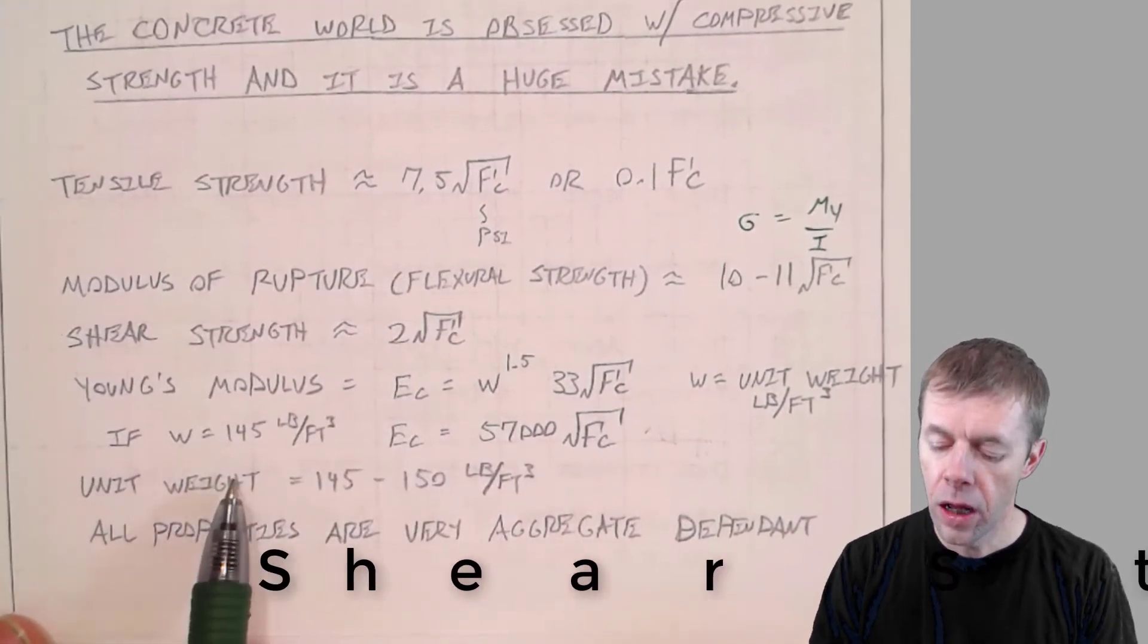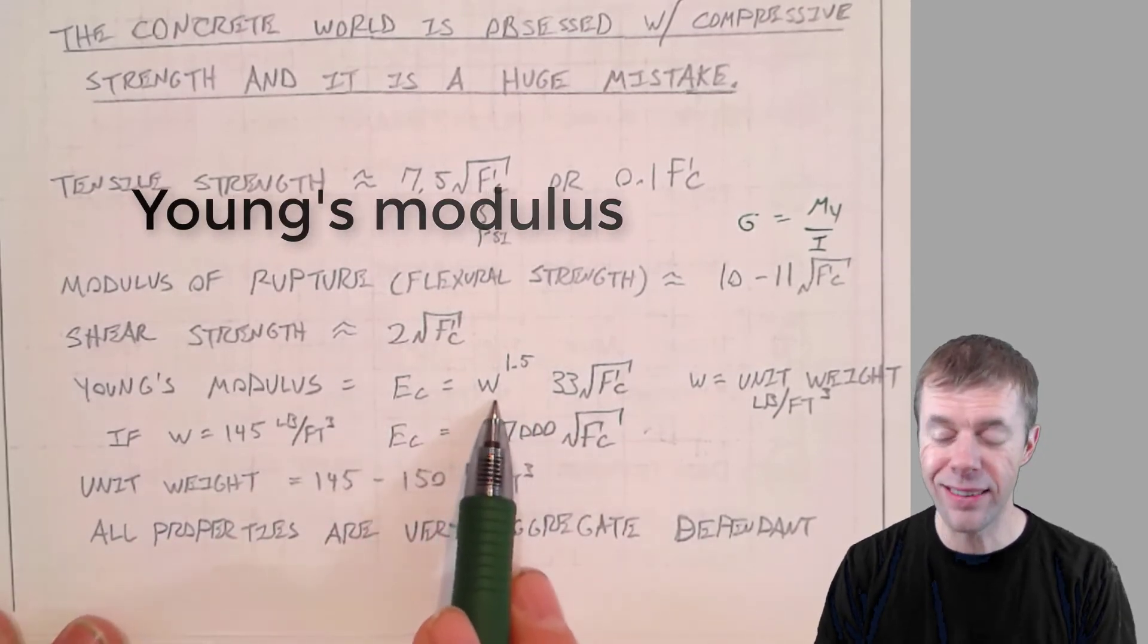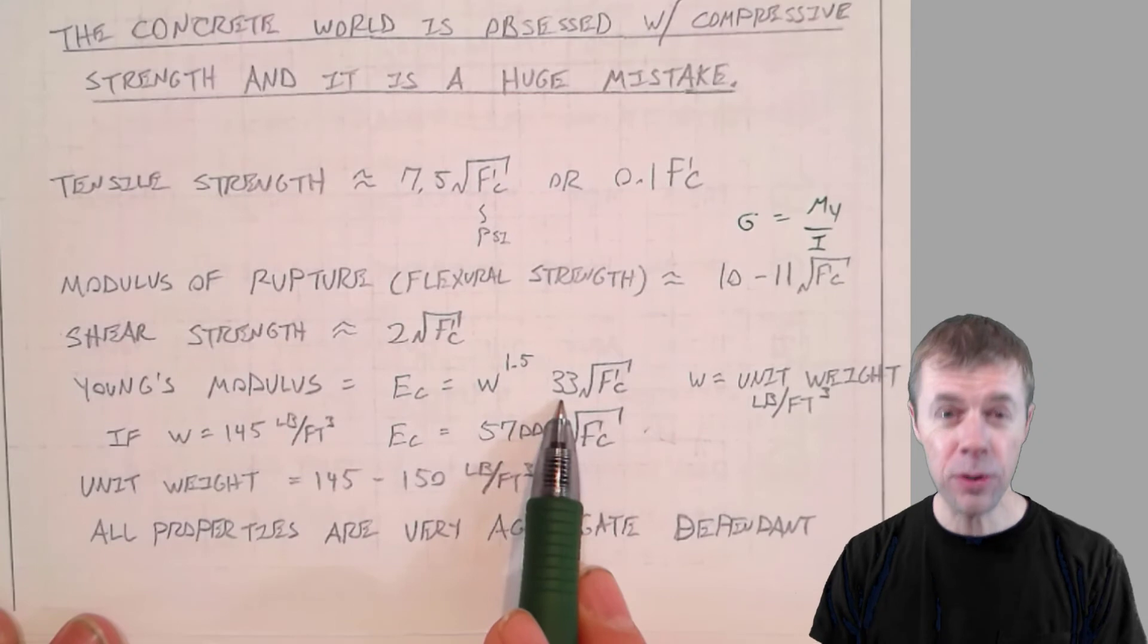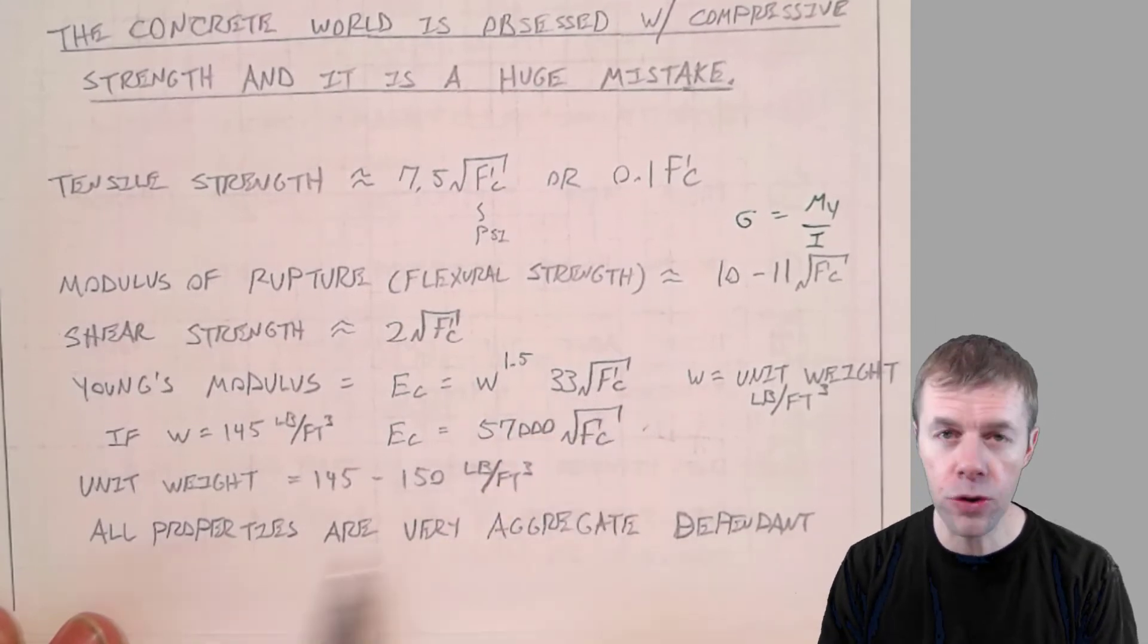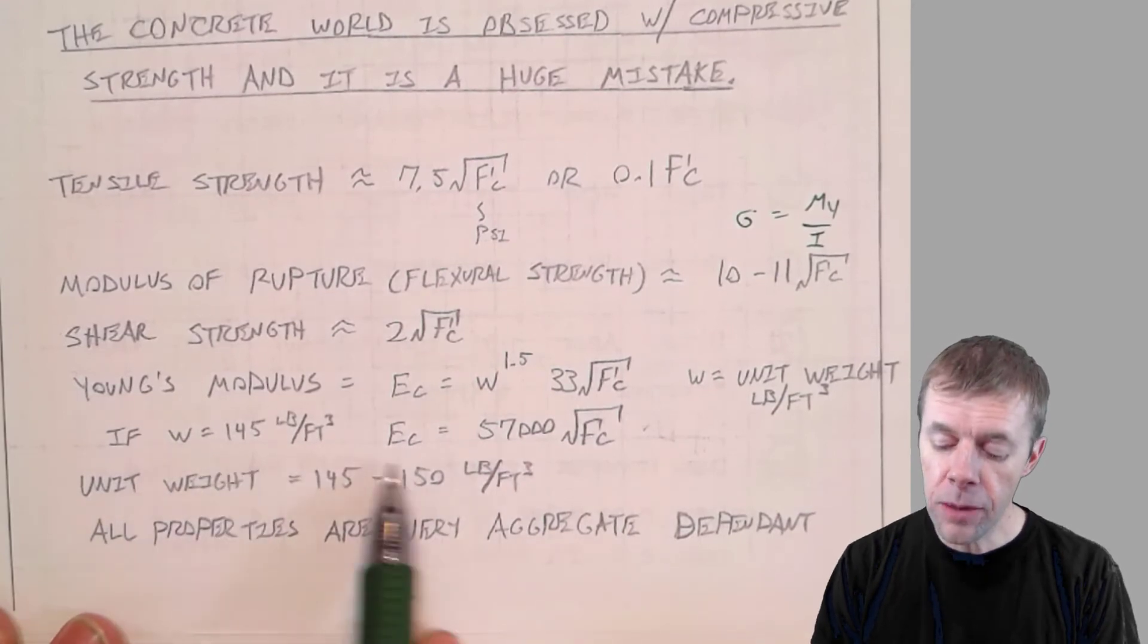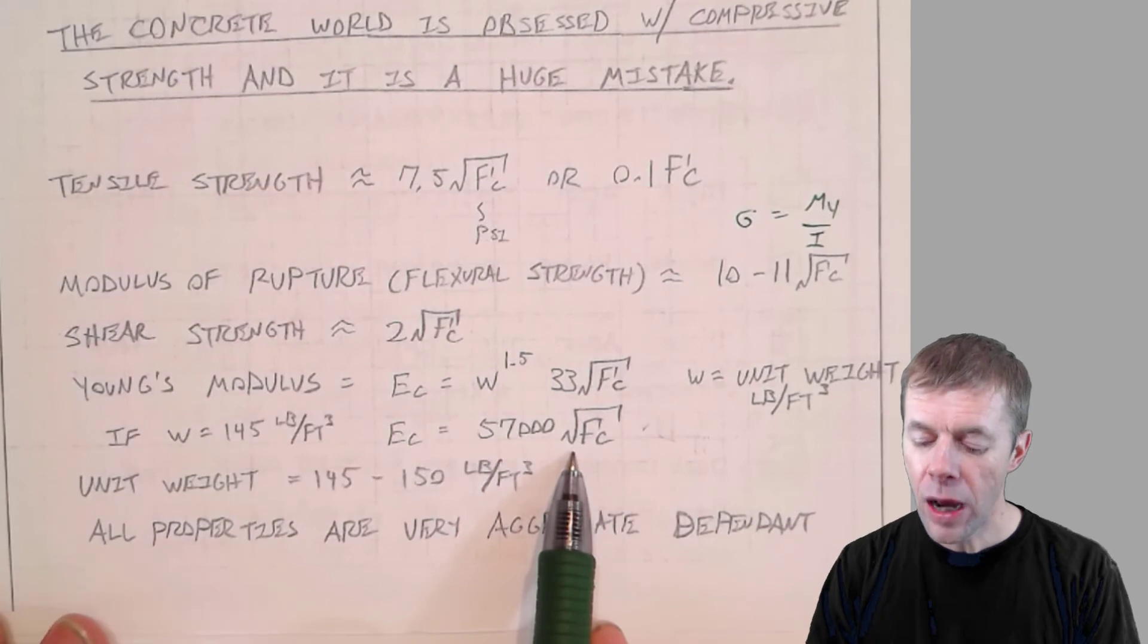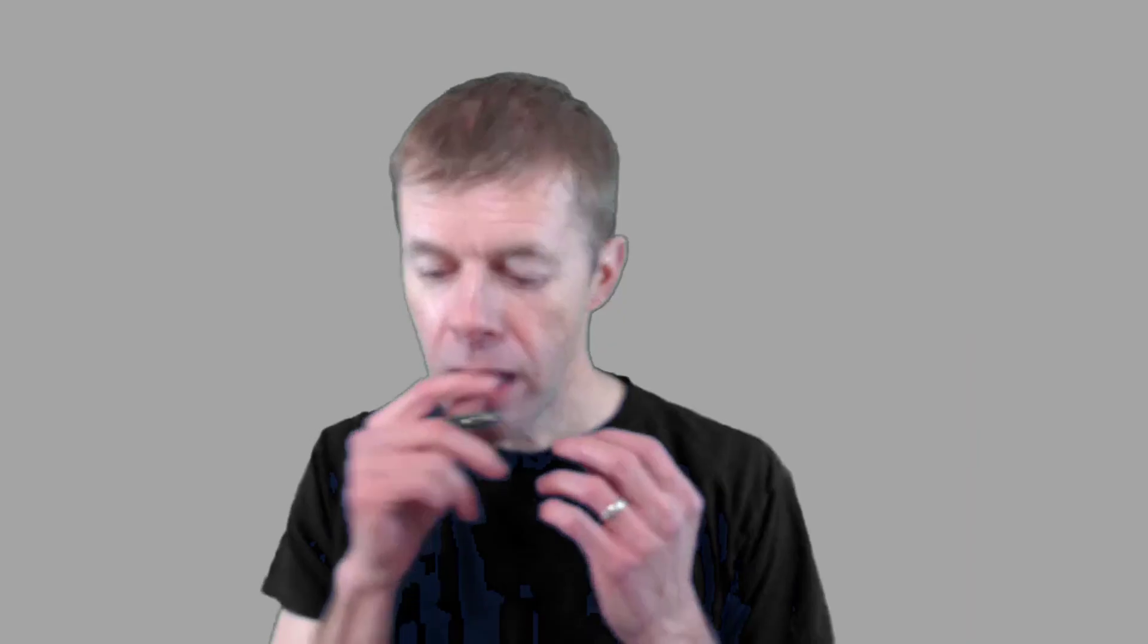The modulus of concrete, here is the equation that is typically used. This is W, that's the unit weight, that's like the density of concrete to the 1.5 power times 33 times the square root of F prime C. Usually we just assume the unit weight's 145 pounds per cubic foot. And that simplifies, that makes this equation simplify to 57,000 times the square root of F prime C.